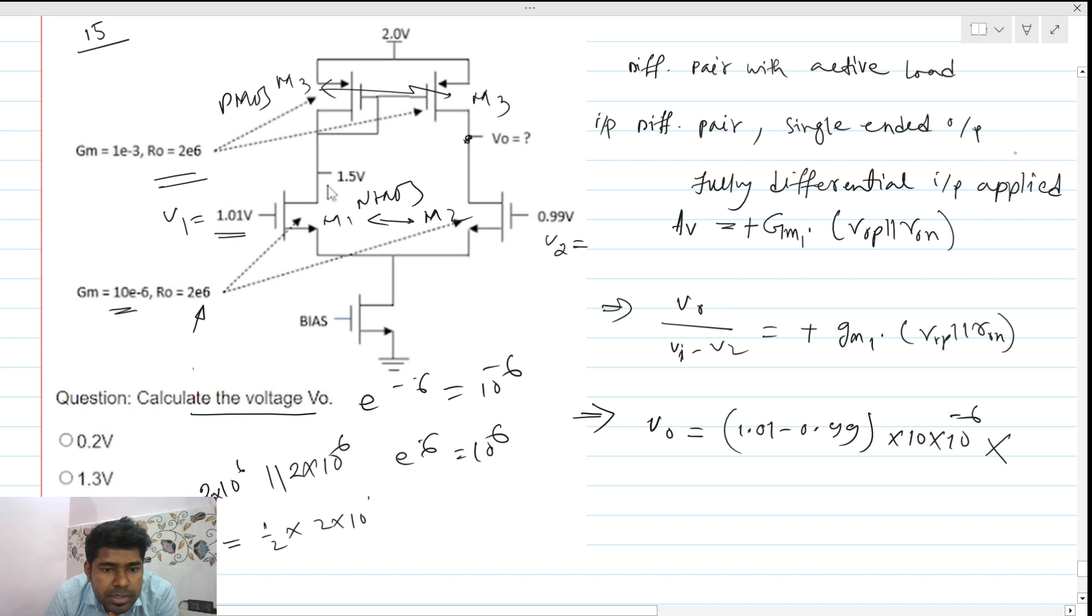So our v out will be... this is 0.02, right? This is 10 power 6, so this cancels. We are having the output as 0.2 volts. This is the correct answer, so option A is the correct answer.